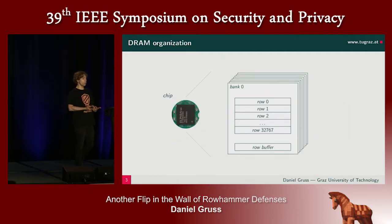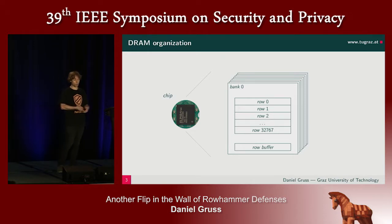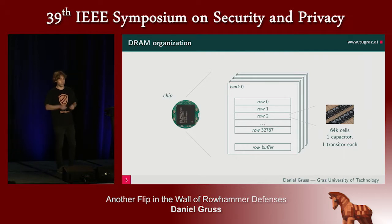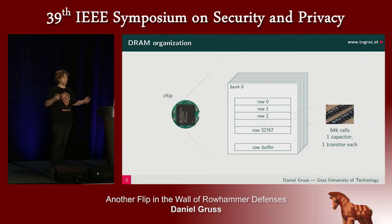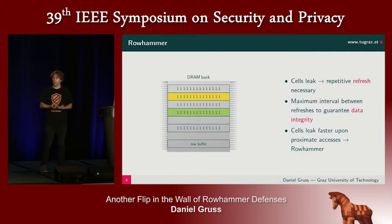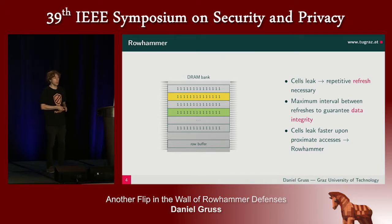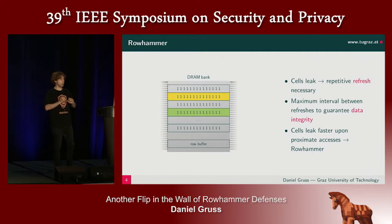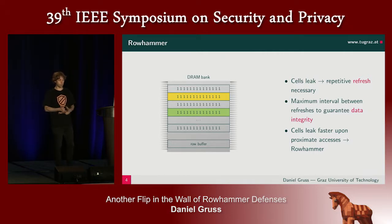And if you look at one of those banks in detail, you'll find that it has several rows — many rows. These are the actual capacitors in the rows, like 64,000 capacitors. These store the actual bits in your memory. When you read from memory, the memory controller has to load the actual bits into the row buffer. That happens in the DRAM, and then it's sent to the memory controller to the CPU.